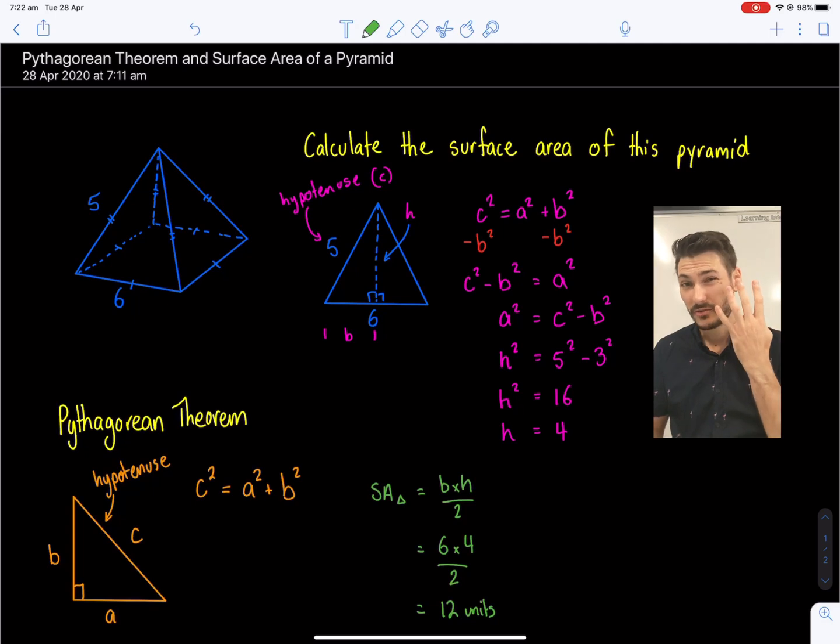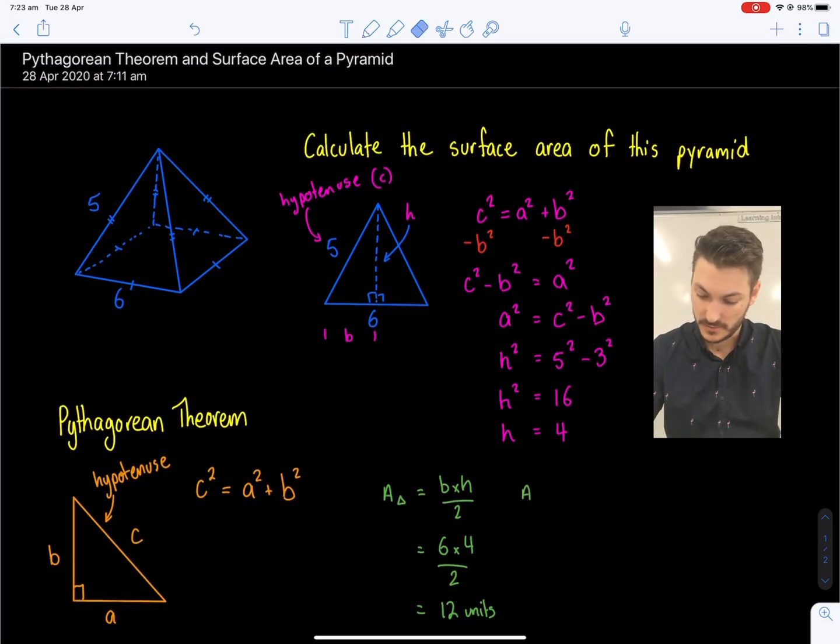So we've got four triangles. Let's just do the area of the square base. The area of the square base is going to be side squared, which is going to be equal to six squared, which is equal to 36 units squared.